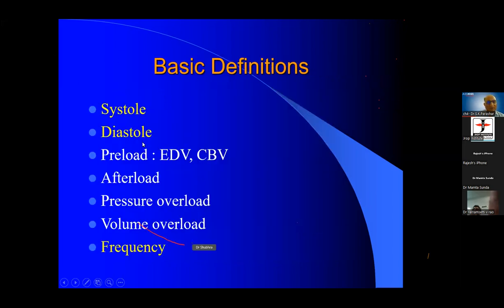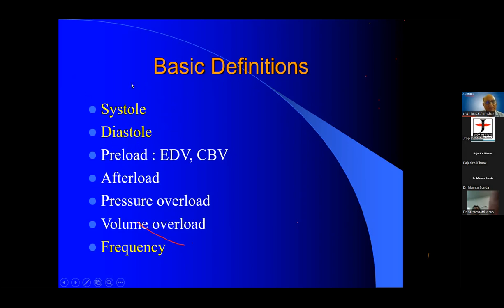Remember these basic hemodynamics regarding the valves — where they are located and when they open. When we talk of systole and diastole, basically it refers to the ventricles. Every chamber undergoes systole and diastole: in diastole every chamber is filled up, in systole every chamber empties itself. But unless specified, whenever we say systole and diastole, it refers to the ventricles. Atria also have their own systole and diastole, but normally without specifying, it indicates the ventricle.